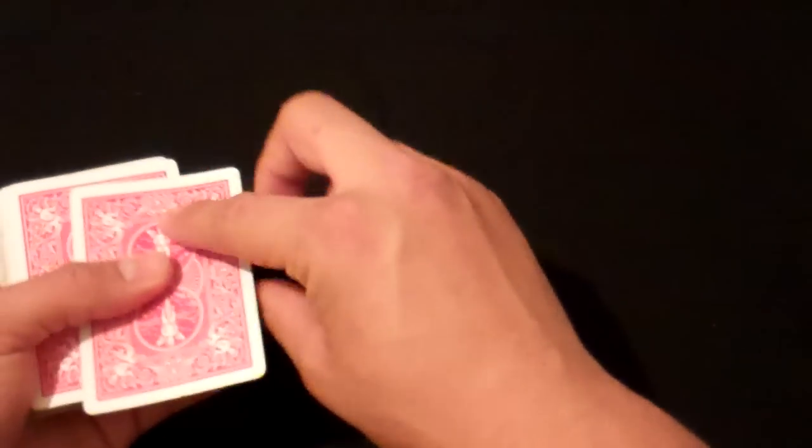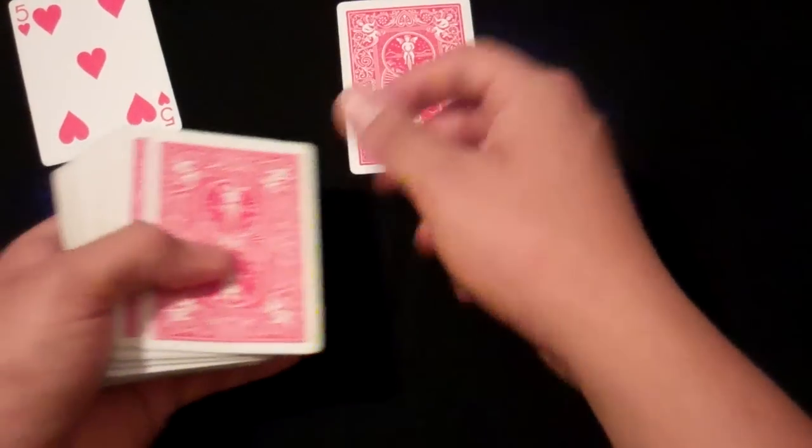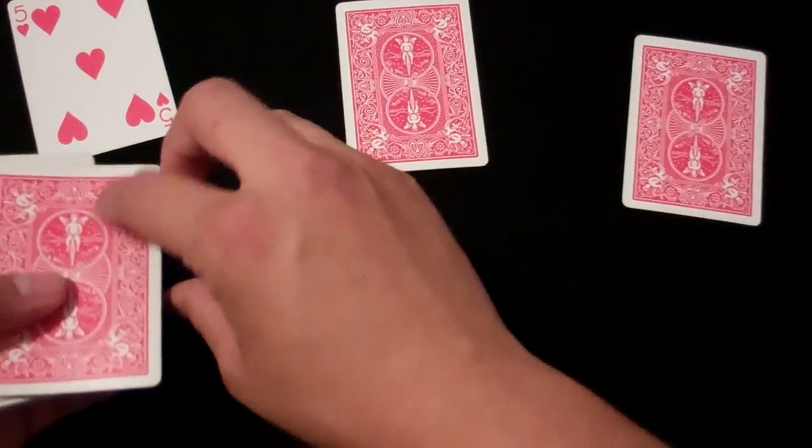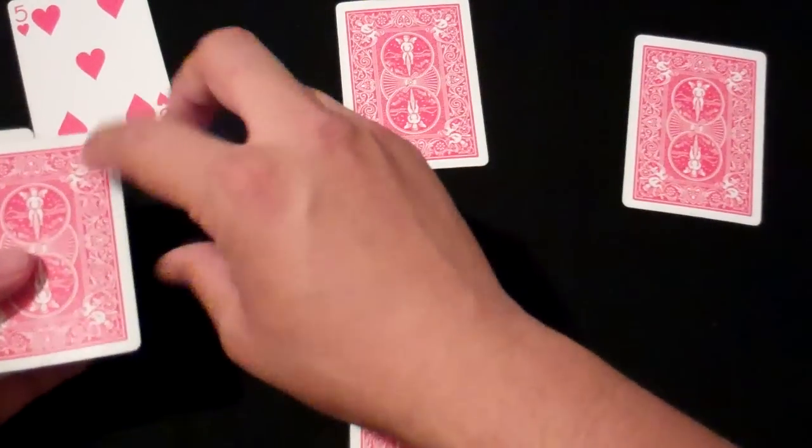Now you ask them to choose the player they want to win. We'll just say this time they want player 1 to win. You just turn the cards over and make sure you always get the 4th card.